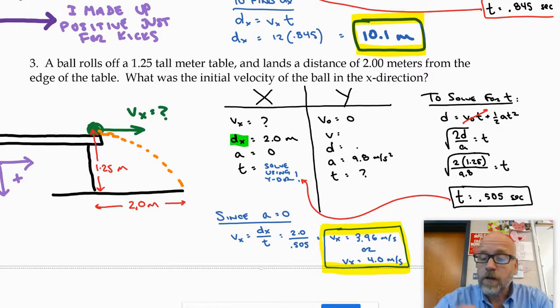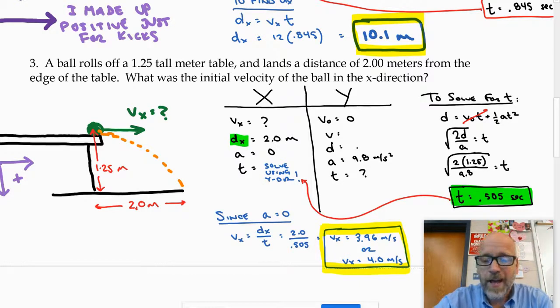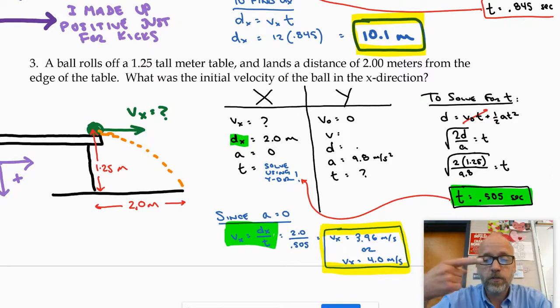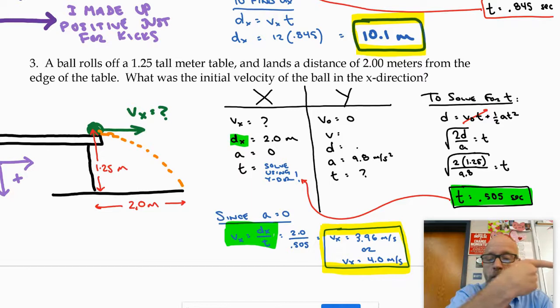Either way, the time is going to depend on just the y-direction. When you go to plug into this relationship, since the acceleration is zero, velocity is just displacement over time. It's going to be the two meters horizontally divided by the 0.5 seconds.